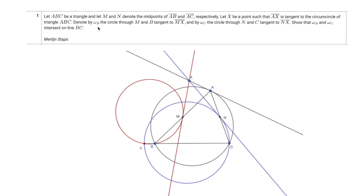We draw a circle omega_B passing through points M and B such that XM is tangent to this red circle. We do the same thing for point N and C, so XN — the purple line — is tangent to the purple circle passing through N and C. The problem is to prove that this red circle and purple circle intersect at a point on line BC. In other words, we want to find a point Y on line BC such that the circle YBM is tangent to XM.